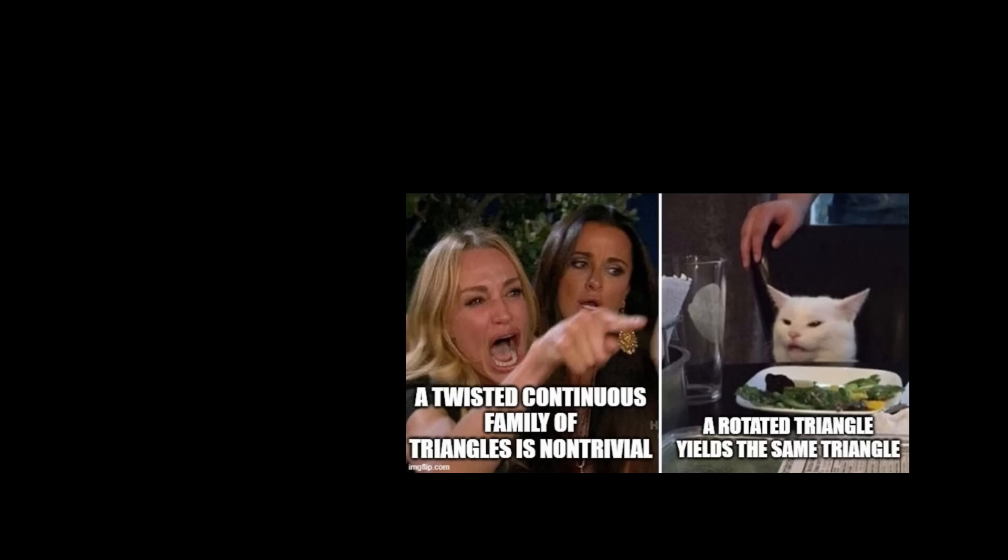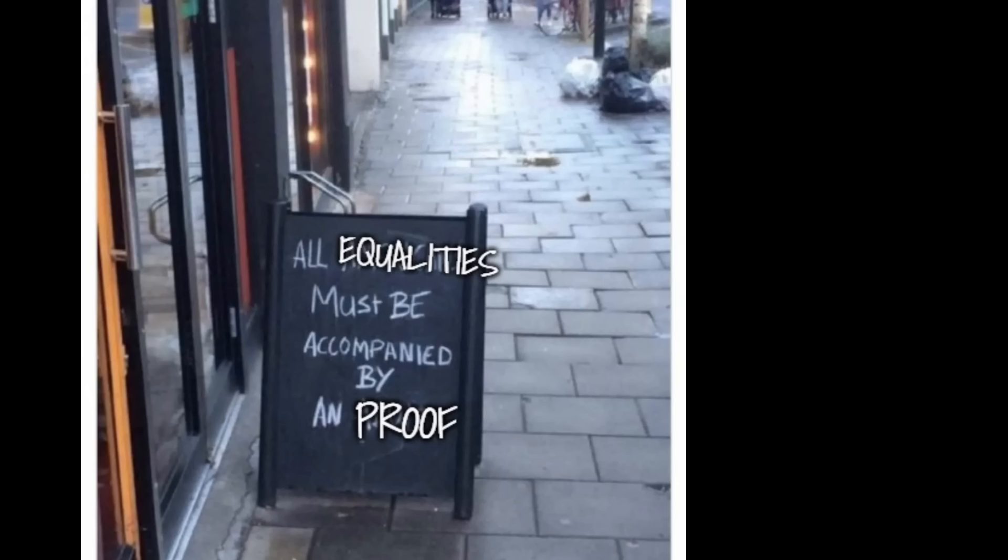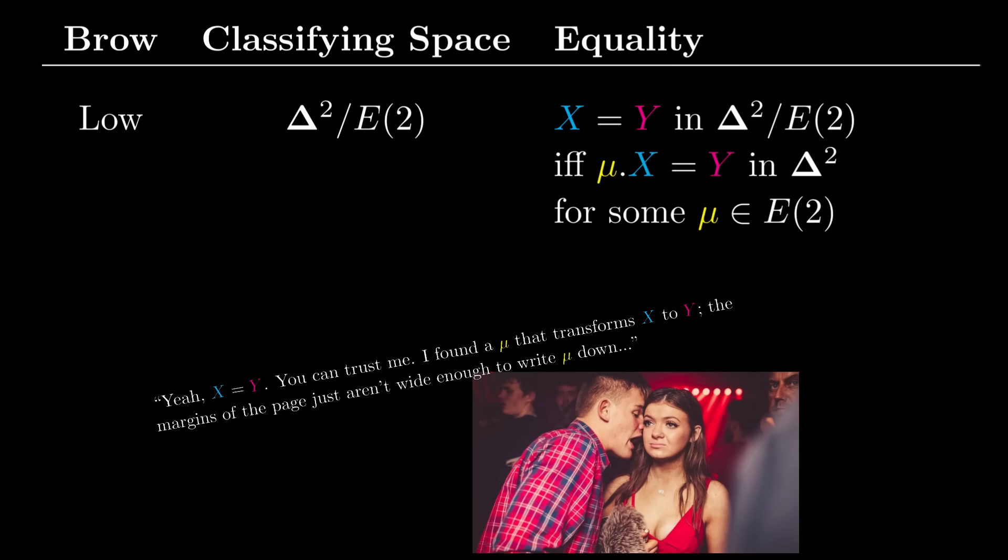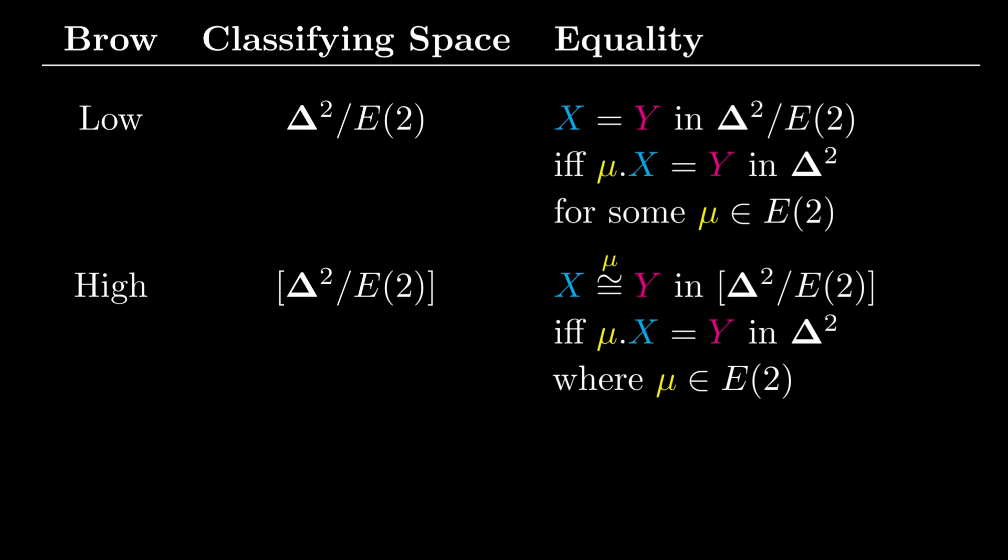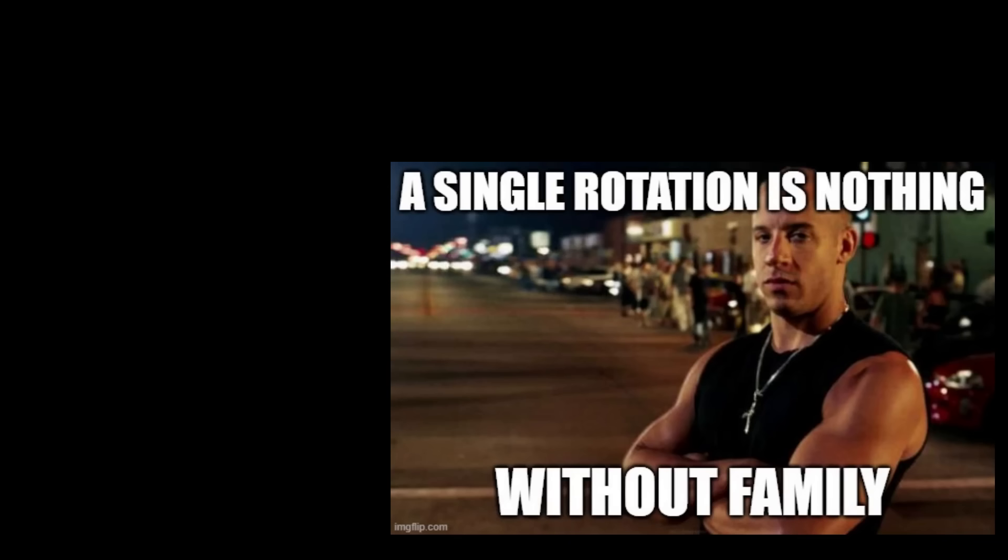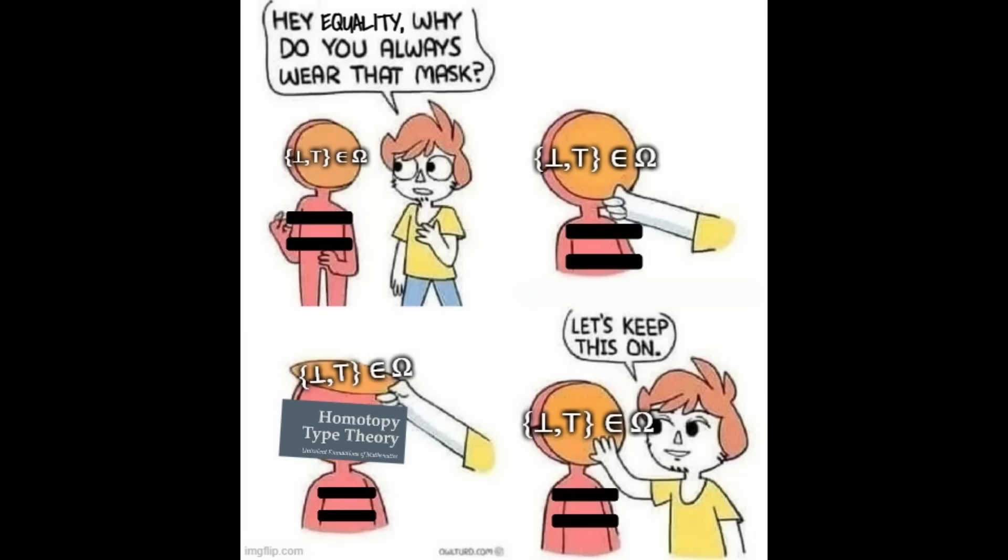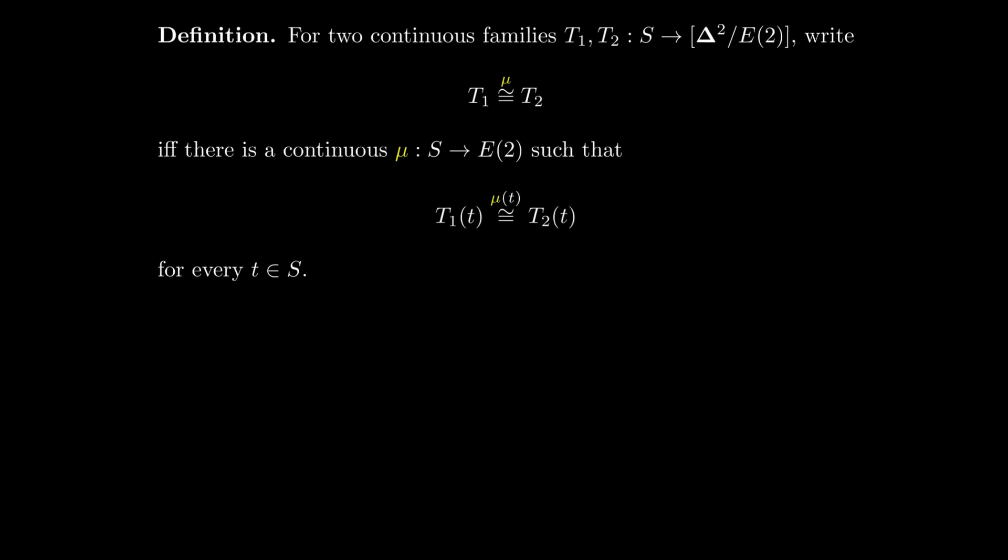One way to reconcile the tensions between identifying triangles and discerning between families of triangles is to make equality more than just a true or false property. What could this possibly mean, though? Well, in our situation with triangles, we said that two triangles are equal whenever you can go from one to another using a Euclidean transformation. Instead of just completely forgetting about which Euclidean transformation was used to show these triangles are equal, why not just annotate the equality with this transformation so that that information is not lost? On individual triangles, this doesn't really change what equality looks like. Equality is still reflexive, symmetric, and transitive, as it should be. However, by holding onto information about how equality is established, we can refine our definition of equality for continuous families of triangles in a way that allows us to see twists.